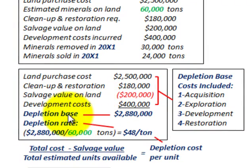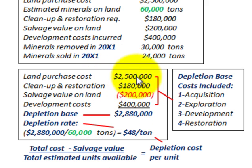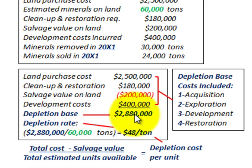Now we have to determine the depletion base and depletion rate. The depletion base includes acquisition cost, exploration cost, development cost, and restoration cost. For our depletion base, we include the land's purchase cost of $2.5 million, plus cleanup and restoration of $180,000, minus the salvage value of $200,000, plus development costs of $400,000. So our depletion base is $2,880,000.